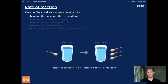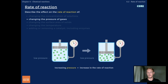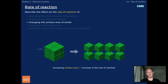Changing the concentration of reactants in a solution affects the rate at which particles collide. An increase in concentration leads to an increase in the rate of reaction. Gas molecules collide more frequently at higher pressures, so increasing the pressure of gaseous reactants leads to an increase in the rate at which they react. Increasing the surface area of a solid reactant, for example by crushing it into a powder, exposes more particles to the other reactant, leading to an increase in the rate of reaction.